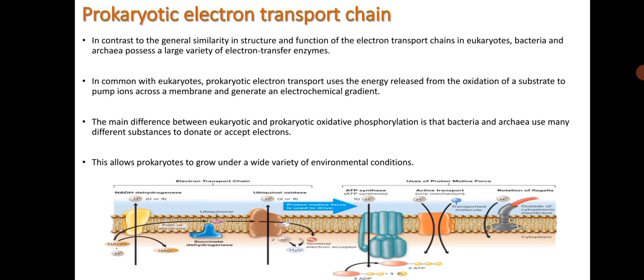In contrast to the general similarity in structure and function of the electron transport chain in eukaryotes, bacteria and archaea possess a large variety of electron transfer enzymes. In common with eukaryotes, prokaryotic electron transport uses the energy released from the oxidation of substrate to pump ions across a membrane and generate an electrochemical gradient. The main difference between eukaryotic and prokaryotic oxidative phosphorylation is that bacteria and archaea use many different substances to donate or accept electrons. This allows prokaryotes to grow under a wide variety of environmental conditions.